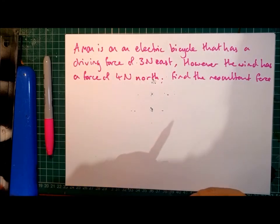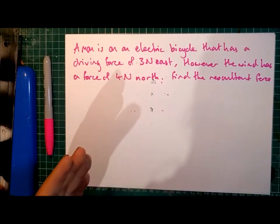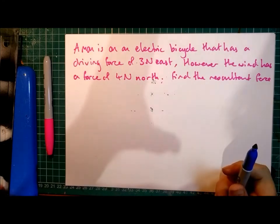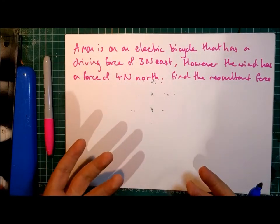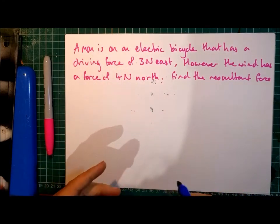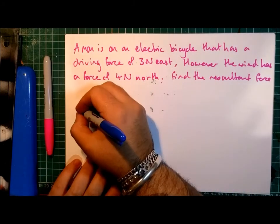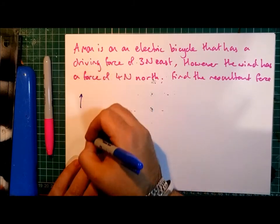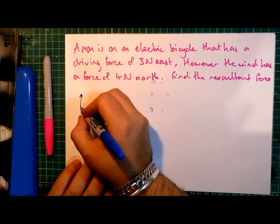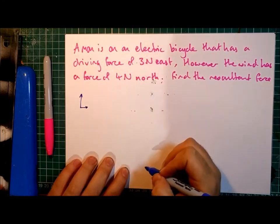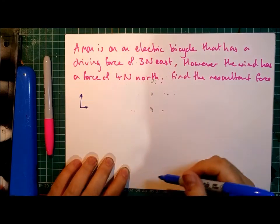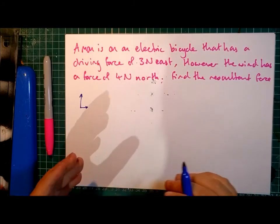These are at right angles to each other. We can use something that we know about the maths of triangles to help us with this question. Rather than drawing the two arrows coming from the same point, with the 4 Newtons north and the 3 Newtons east, that's not as useful to me. What I'm going to do is I'm going to top and tail them.